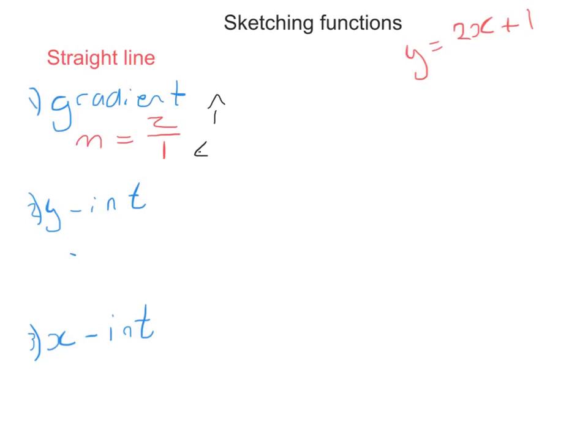I know my gradient is 2 over 1. What is my y intercept? Well, the y intercept is always going to be the value of c, which is that value plus 1. So, in this case, my y intercept is equal to 1.